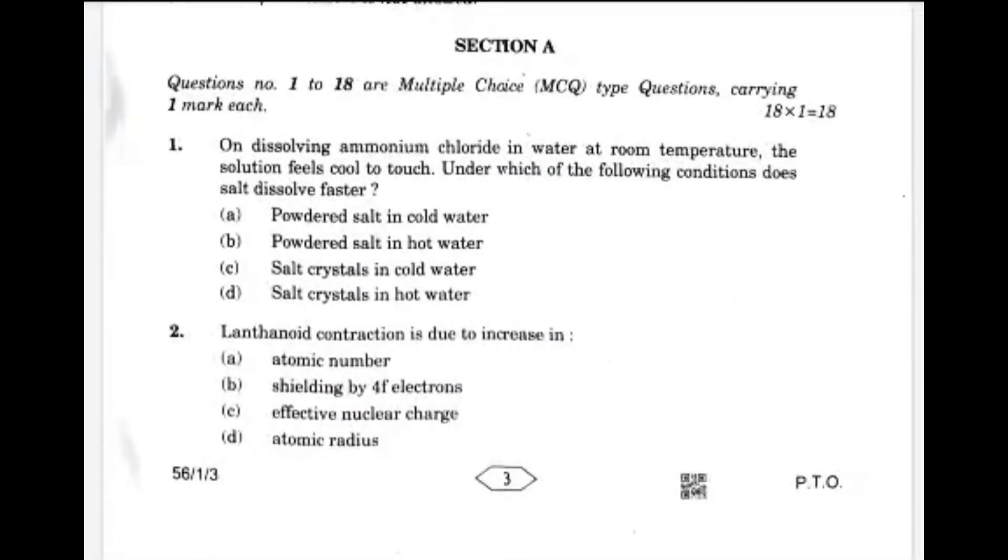Let's see the first one. On dissolving ammonium chloride in water at room temperature, the solution feels cool to touch. Under which of the following conditions does salt dissolve faster? This is option B, powdered salt in hot water. Lanthanide contraction is due to the increase in, that is option C, effective nuclear charge.